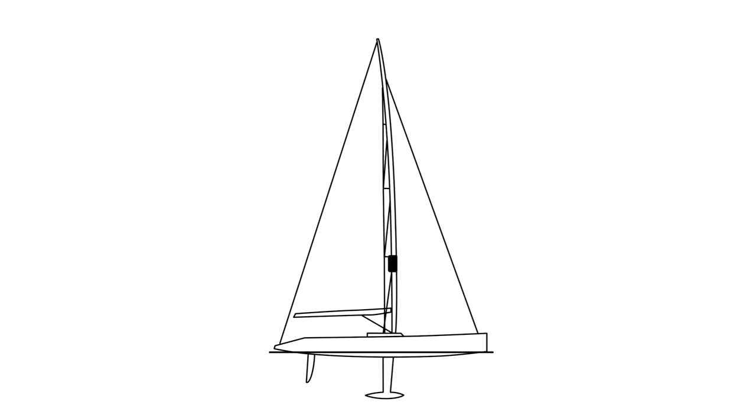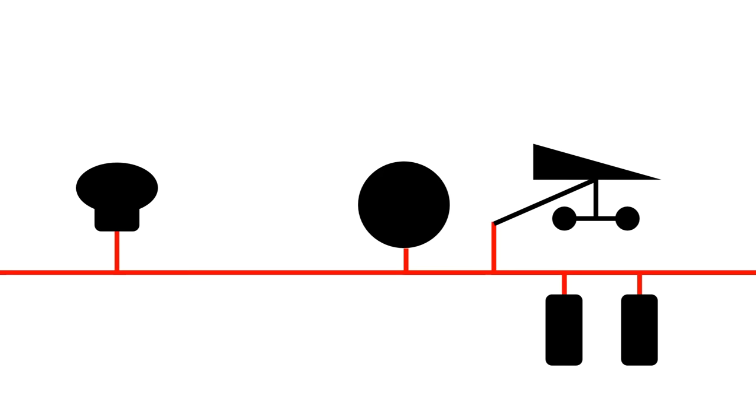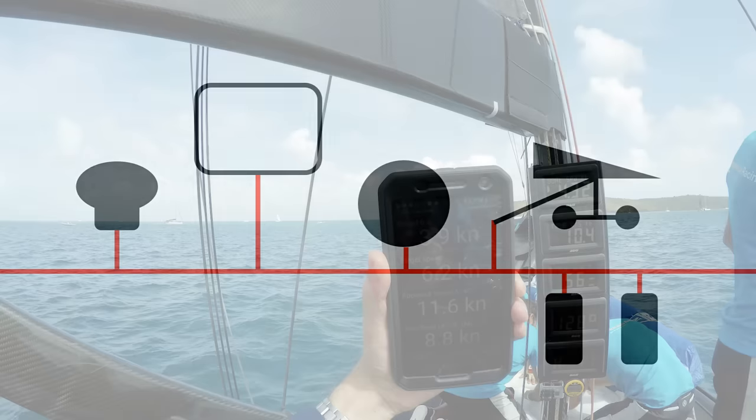Usually there are a lot of sensors like water speed, compass heading, GPS speed, anemometer, depth sensor, etc., all connected to a network, processed by an onboard computer and displayed on the instruments.